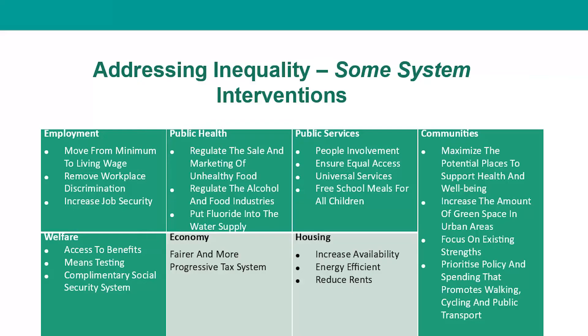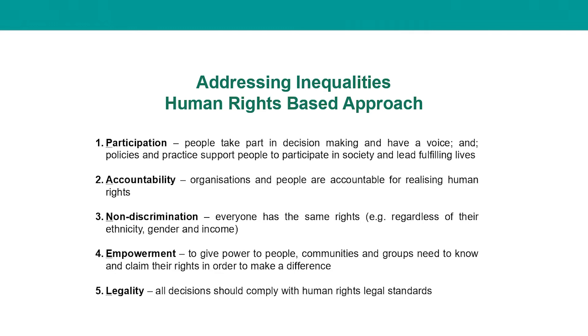From a public health perspective, how do we manage that? There are a range of different system interventions that we can apply, both in terms of employment, public services, communities, progressive tax systems, the quality of housing, and access to benefits. And then there's a human rights approach in terms of our ability to participate and not be discriminated against, and to feel empowered to shape the places in which we live, learn, work, and bring up our families.